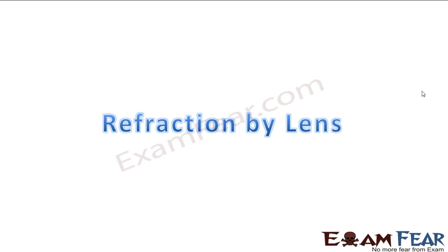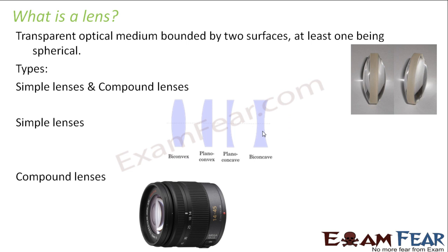Before studying refraction by lens, it is good to know what a lens is. A lens is a transparent optical medium bounded by two surfaces, at least one being spherical. Till now we talked about concave spherical surfaces, convex surfaces, and plane surfaces. A lens is a combination of any two surfaces such that at least one surface should be spherical.